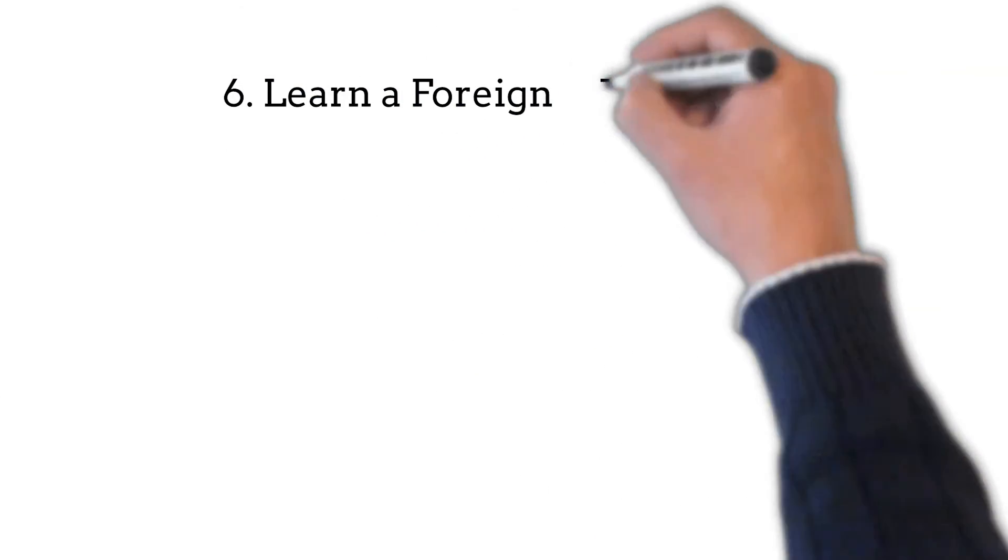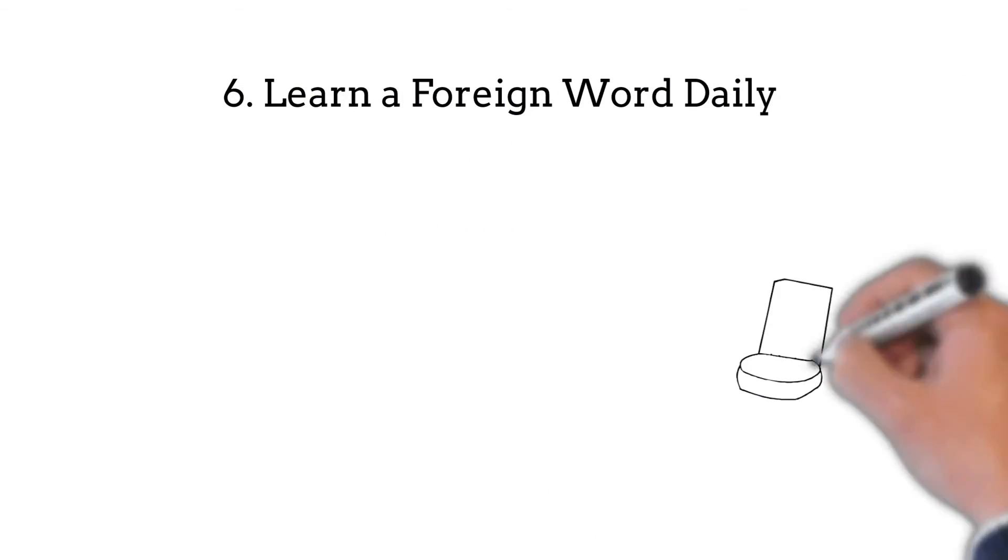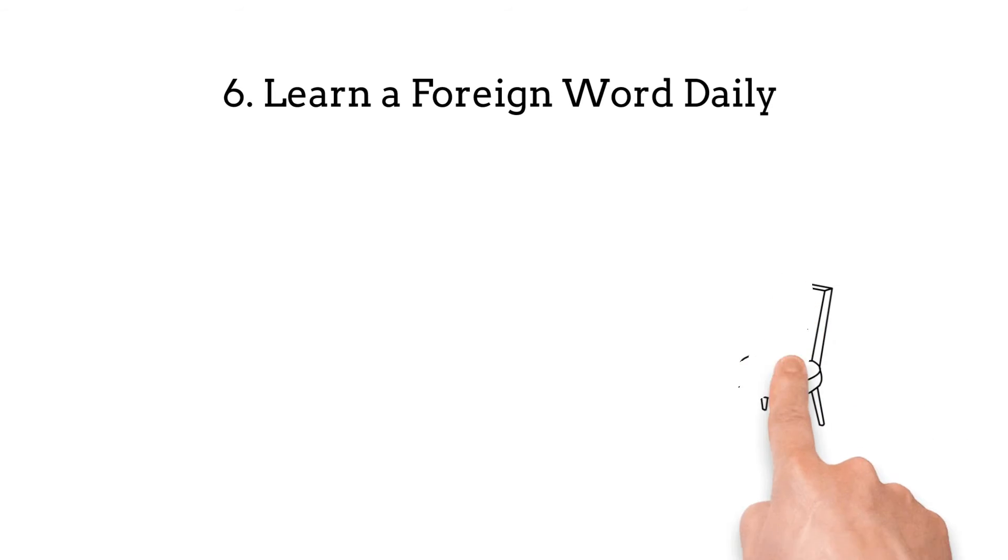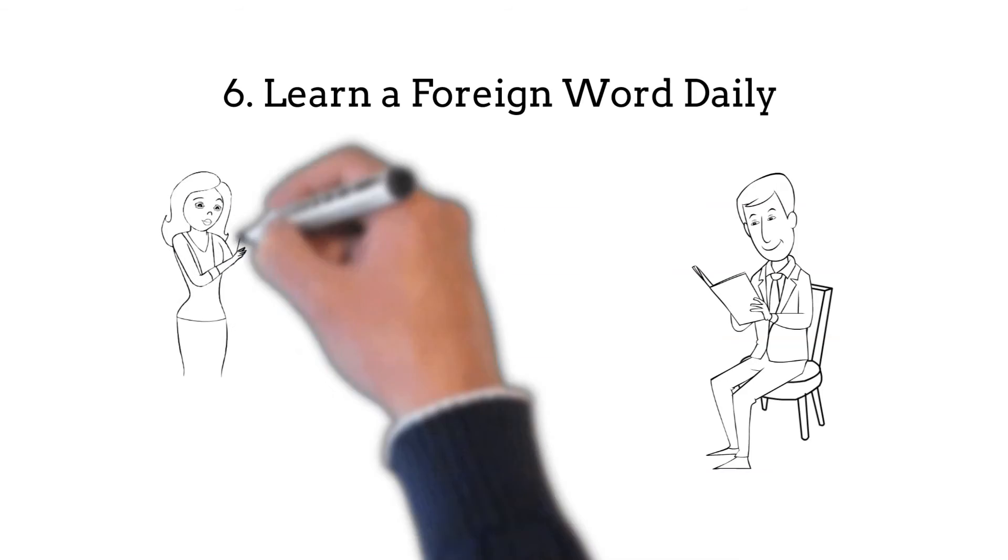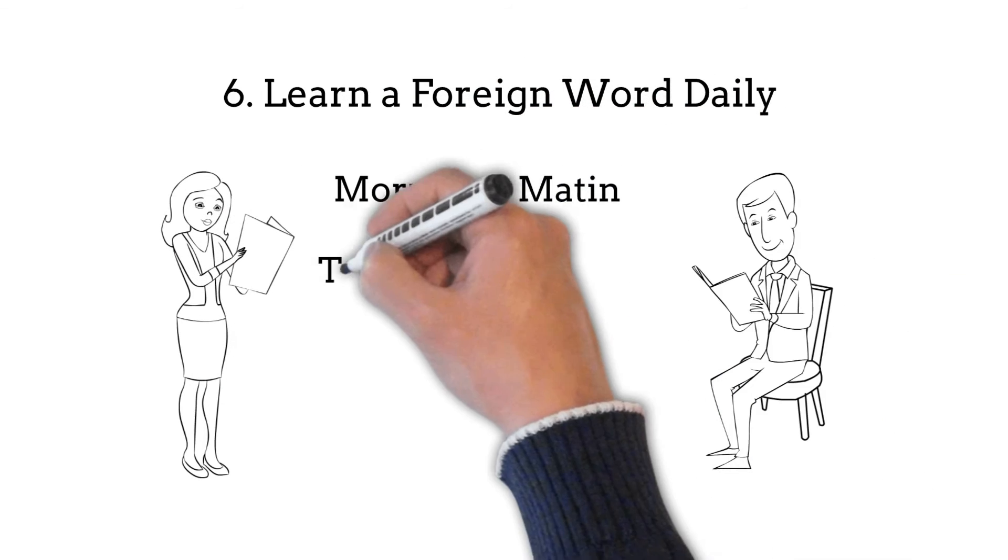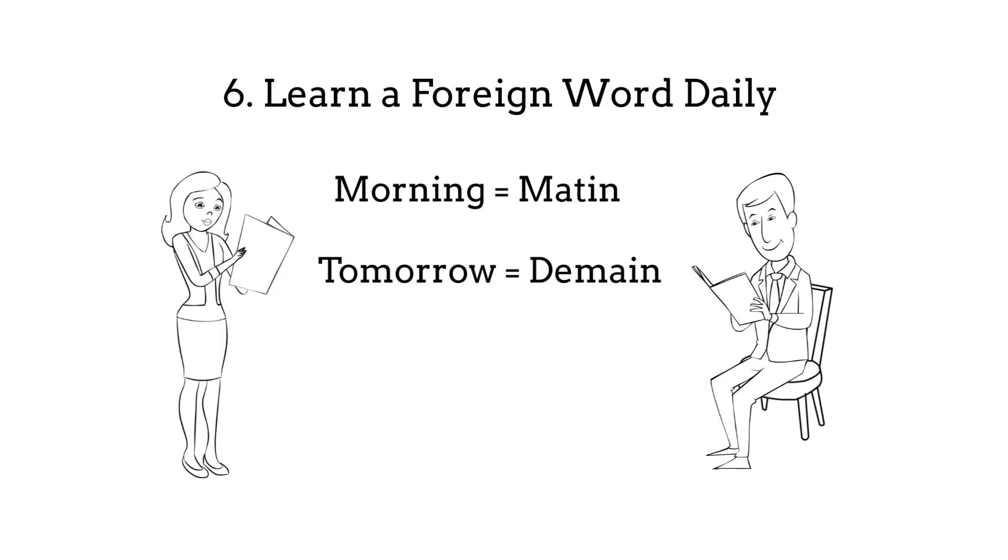6. Learn a foreign word daily. Learning a foreign word daily creates new neural pathways in your brain. You can learn a new language while having fun and exercising your brain. Even if you don't learn a new language, simply learning a new word exercises your brain to keep it fit.